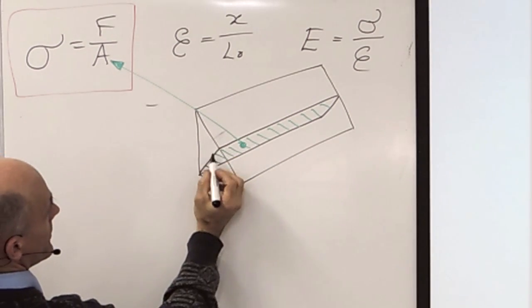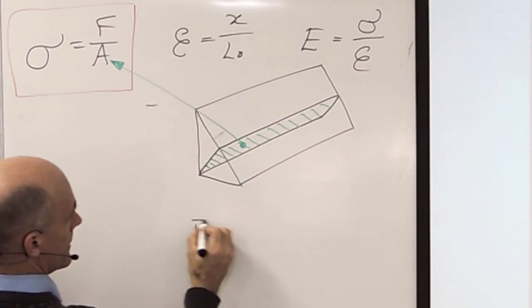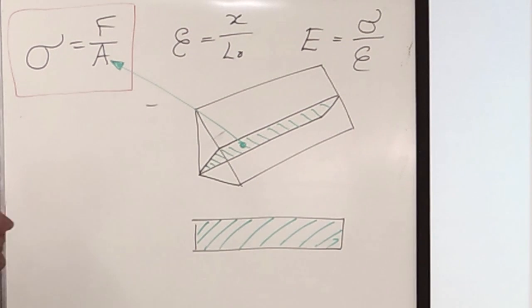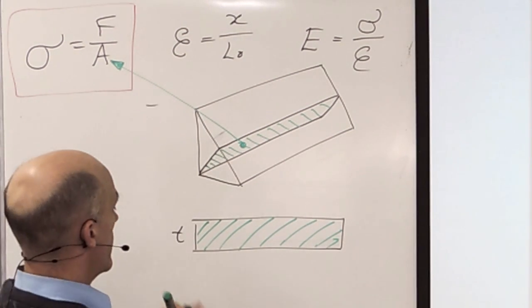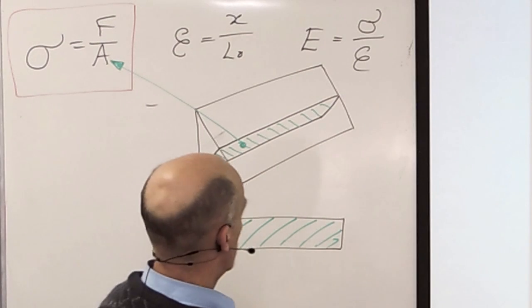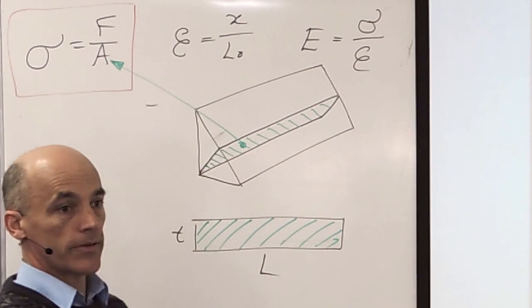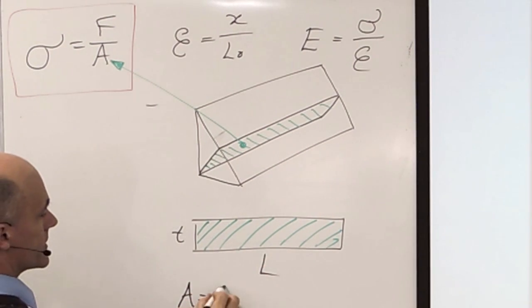So how do I work out the area? I need the throat thickness. This is a rectangle this thing. This is T, the throat of the weld. And this is the length of the weld, L. So area equals T times L.